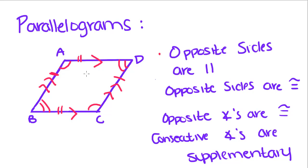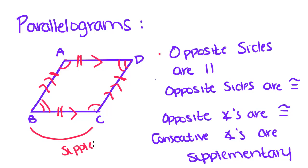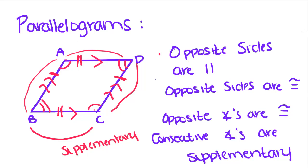Opposite sides are congruent, so AB is congruent to DC, and BC is congruent to AD. Opposite angles are congruent, so angle B is congruent to angle D, and angle A is congruent to angle C. And consecutive angles, which are side-by-side angles, are supplementary — so each pair of consecutive angles adds up to 180 degrees.